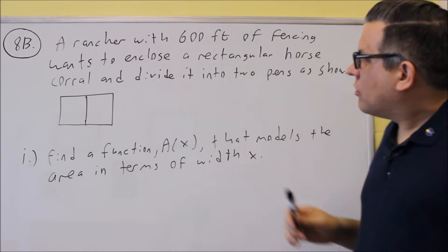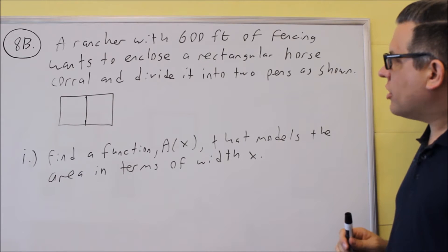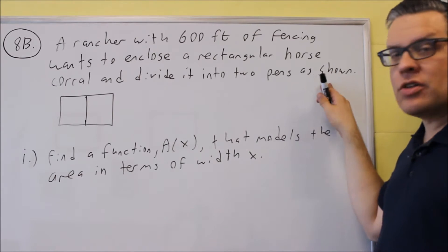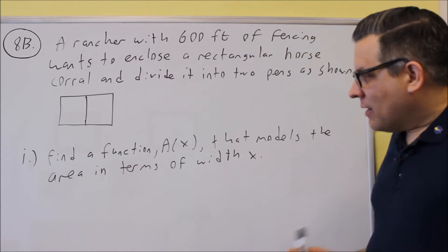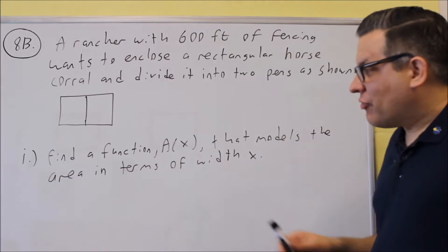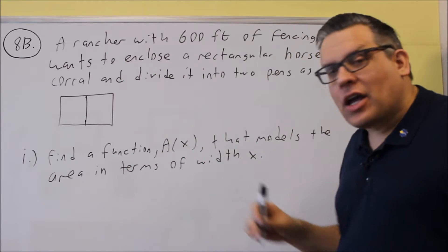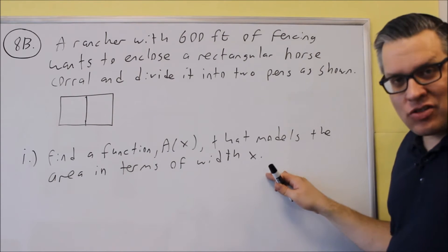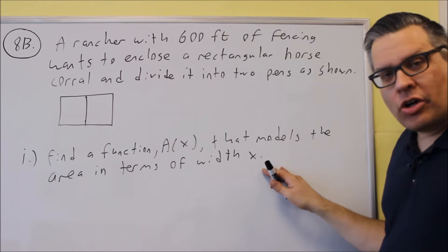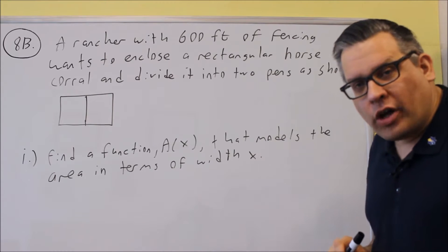It says a rancher with 600 feet of fencing wants to enclose a rectangular horse corral and divide it into two pens as shown. And this drawing has been given to you. So the first part asks us find a function A(x) that models the area in terms of width x.